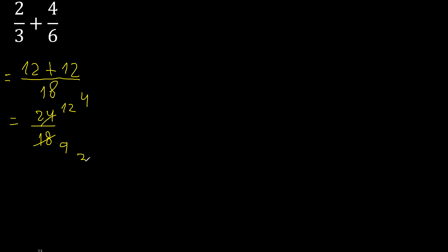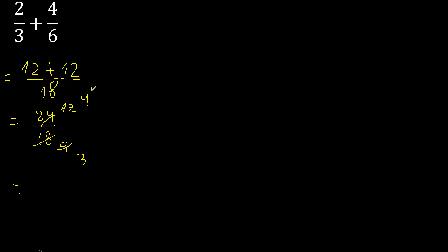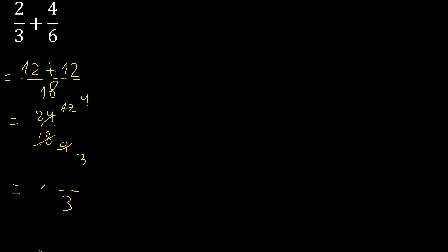We get 4/3. Since 4 is greater, we convert: 3 multiplied by which number is nearest to 4 but not greater? 3 multiplied by 2 is 6, which is greater. So 3 multiplied by 1 is 3, which is not greater. 4 minus 3 is 1, so the result is 1 and 1/3.